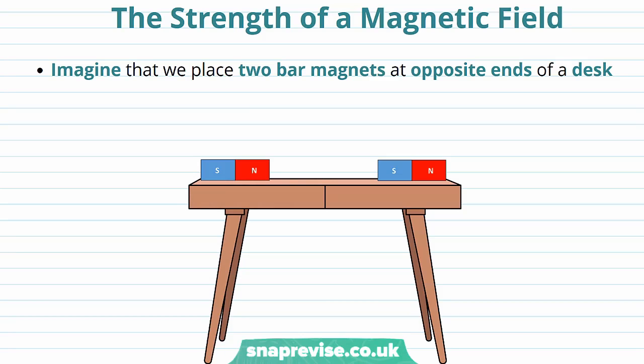We're now going to discuss the strength of magnetic field. Imagine that we place two bar magnets at opposite ends of a desk, separated by a relatively large distance.